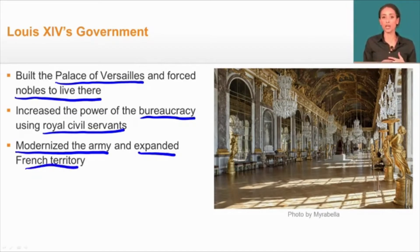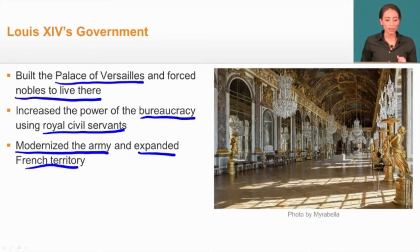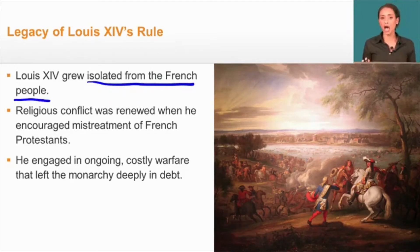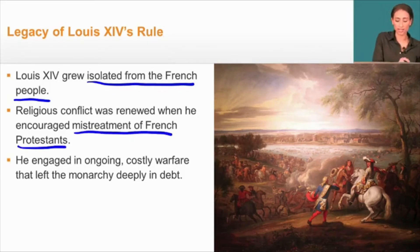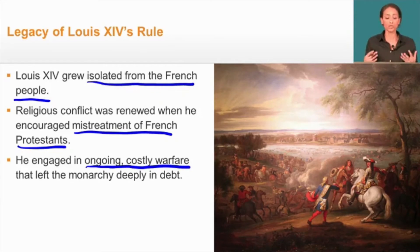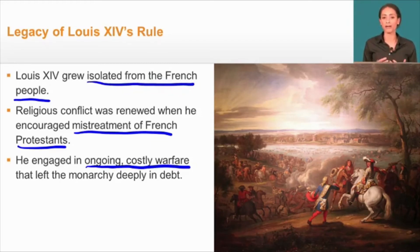Louis XIV is one of the most powerful kings as a result of all these things, but he had some shortcomings. Over time he grew more isolated from the French people, seen as out of touch with the common man. Because he encouraged the persecution of French Protestants and revoked the Edict of Nantes, religious conflict was renewed. And because of his lavish lifestyle and the ongoing costly wars he kept pursuing, the monarchy was deeply in debt — sowing the seeds for the revolution in France about 75 years after his reign.